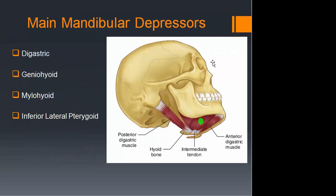The main mandibular depressors are the digastric, geniohyoid, and mylohyoid, as well as the inferior lateral pterygoid. We've covered these in other anatomy classes, but we will palpate them when doing a TMJ examination — especially the digastrics — as they are important for finding trigger points.